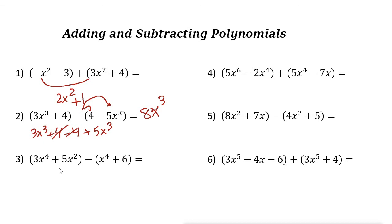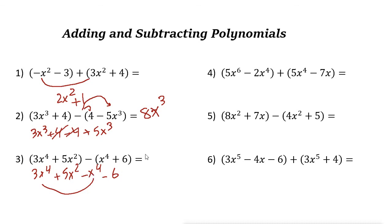Again we have a negative, so write the first one: 3x⁴ plus 5x squared. Negative times x⁴ is negative x⁴, and negative times 6 is negative 6. Now combine like terms: 3x⁴ minus x⁴ is 2x⁴. For 5x squared, we don't have any like terms, so it stays as plus 5x squared, then minus 6.